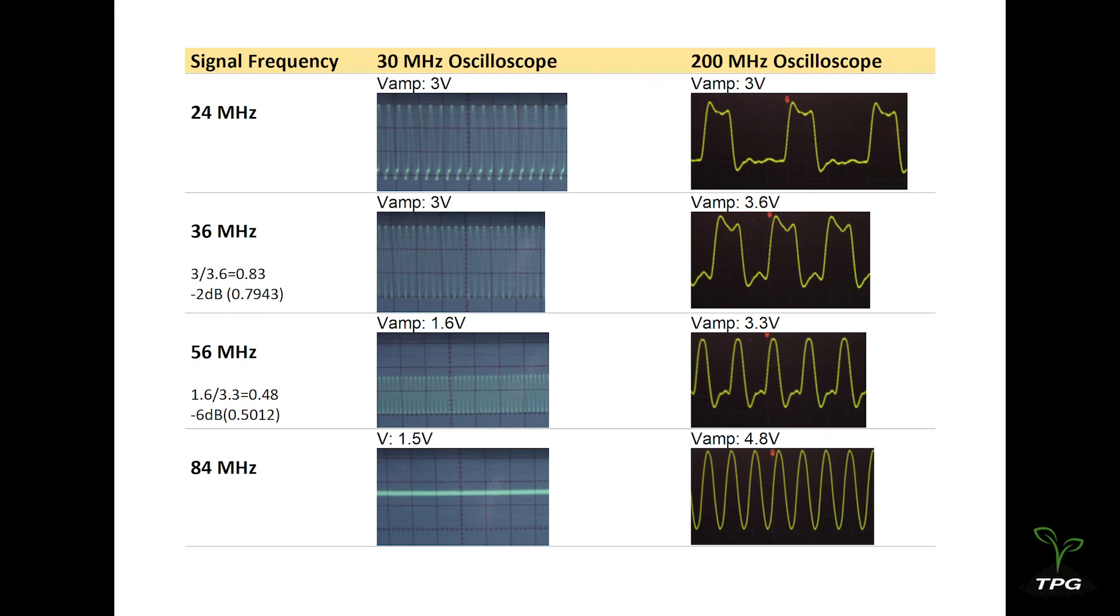As the frequency continues to increase, the input signal, similar to a sine wave in this case, will eventually be totally distorted on the oscilloscope, resembling a DC signal with a much lower voltage.